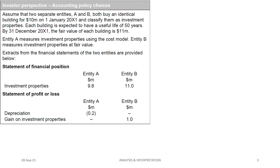Now let's see how the difference arises. In the statement of financial position, Entity A shows 9.8 million — that's 10 million cost minus depreciation of 0.2 (10 divided by 50 years). Entity B uses the fair value model, so it records 11 million. In the statement of profit and loss, Entity A has depreciation of 0.2, while Entity B records a gain on investment property of 1 million (from 10 to 11).